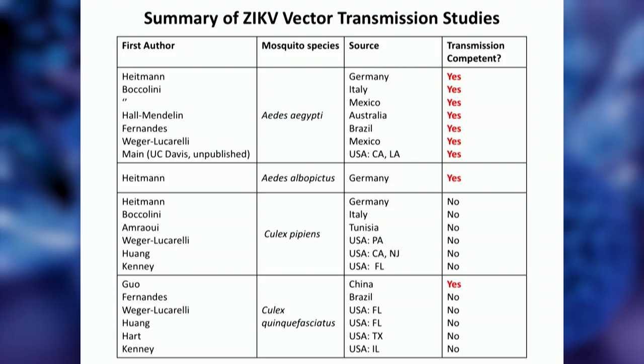There's an interesting phenomenon where within a given mosquito species there can be regional or geographic variations in transmission capacity. There's also interest in understanding whether Aedes aegypti from one place is as transmission competent as from another. This data synthesizes the field of vector transmission studies, where groups from various places collected their local mosquitoes and assessed transmission capacity. The data confirms that Aedes aegypti from all over the world are capable of transmitting Zika, as is Aedes albopictus from one study in Germany.